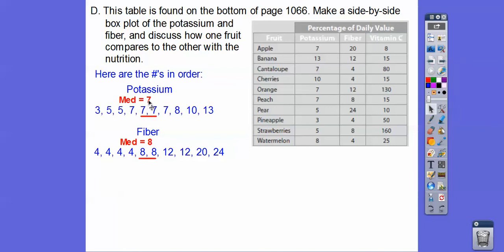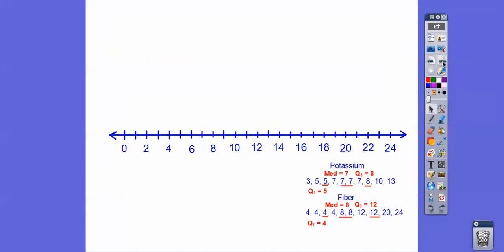So go 3 up this way—1, 2, 3. This is quartile 3. 1, 2, 3, quartile 1. Start here, 1, 2, 3, quartile 3. So we're going to use those to make the box plots. So the boxes come from 5, 7, and 8. And the other box is going to come from, for the fiber, 4, 8, and 12. So we're going to make boxes at those boundaries right there.